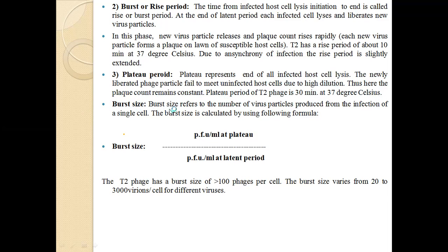Burst size refers to the number of virus particles produced from the infection of a single cell. Burst size is calculated using the following formula: Burst size = plaque-forming units per ml at the plateau period ÷ plaque-forming units per ml at the latent period.